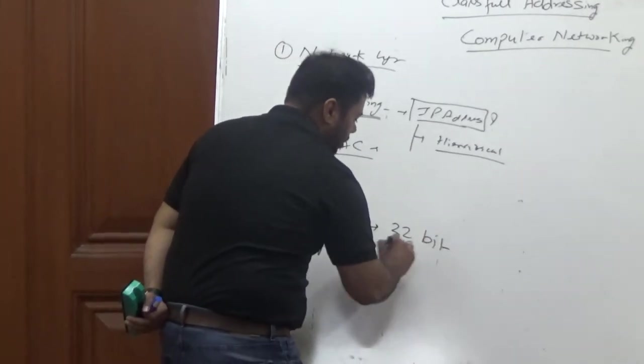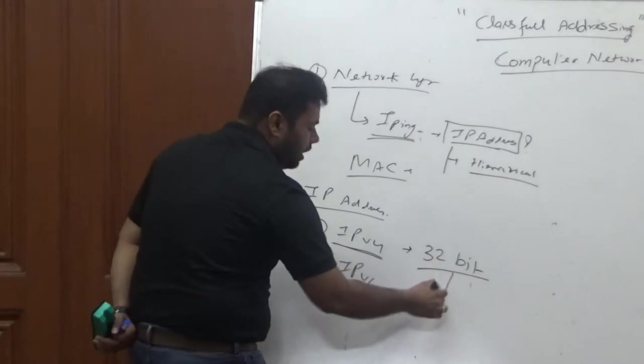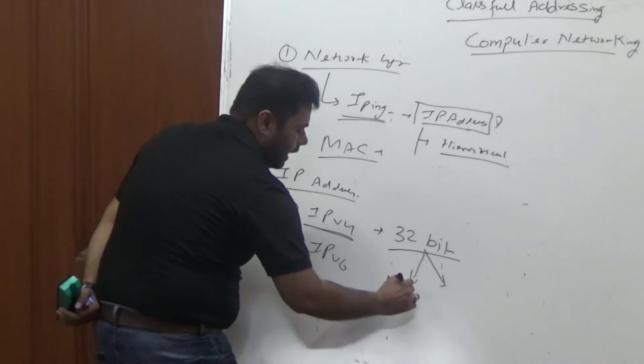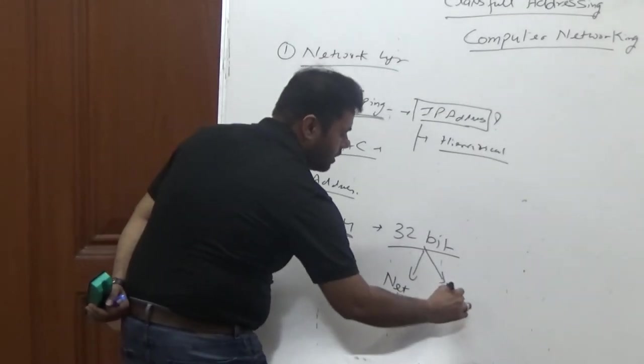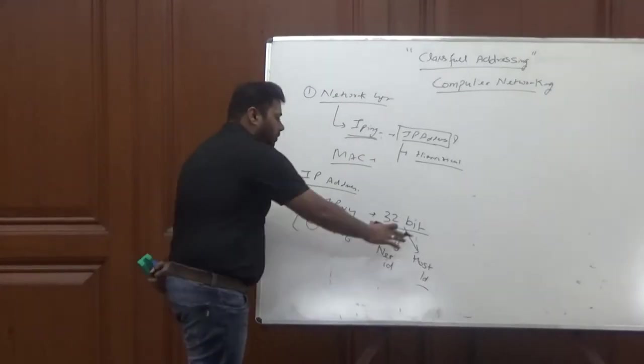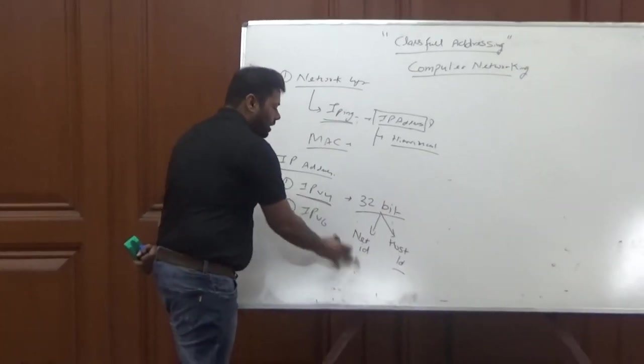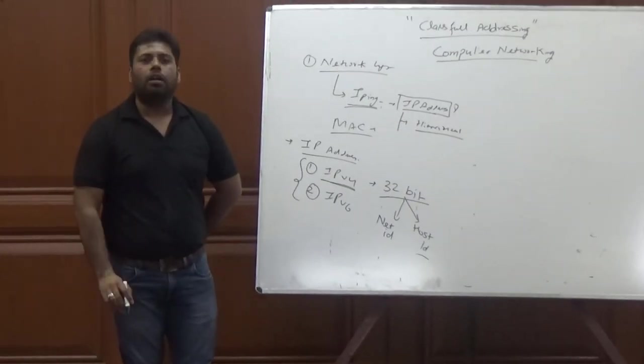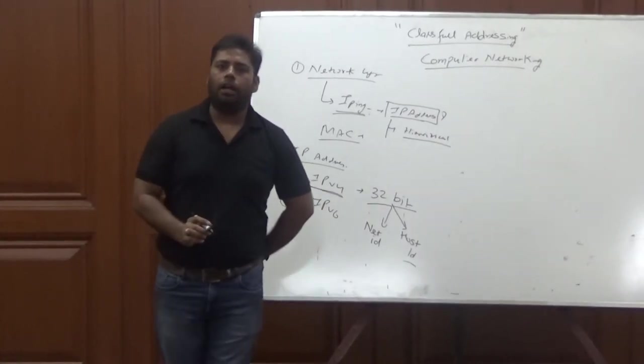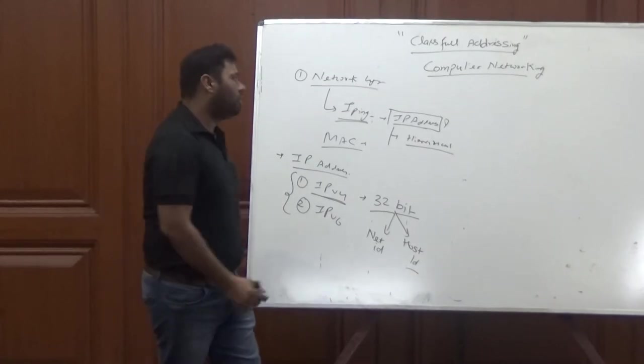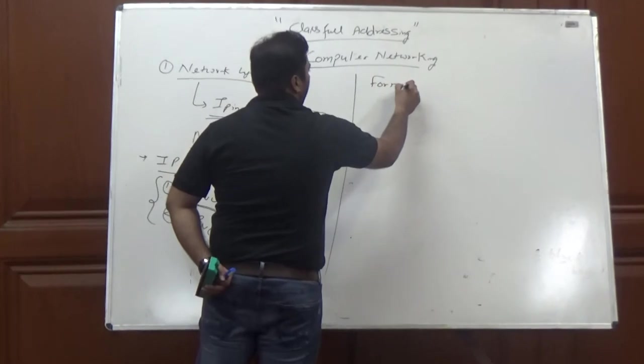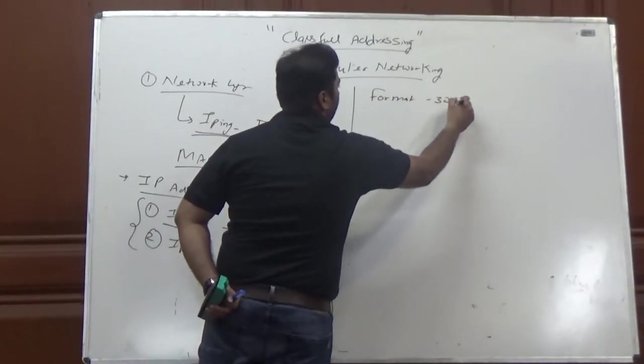This 32-bit address is a combination of two partial addresses: NetID or NetworkID, and HostID or MachineID. I have to identify how many bits are allocated to the NetID and how many bits to the HostID. Based on that, we have to find the format of this 32-bit IP address.